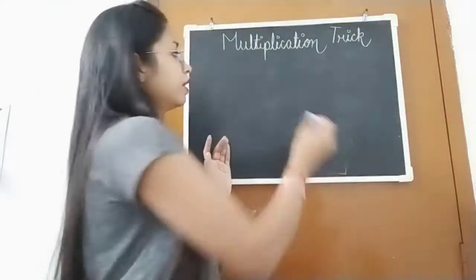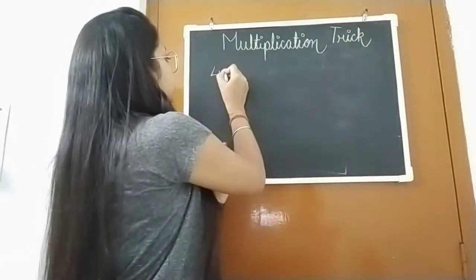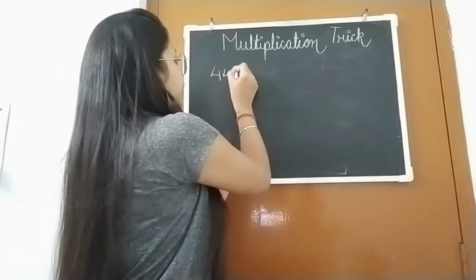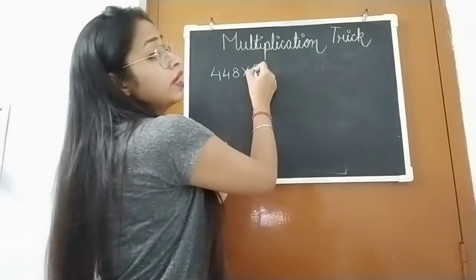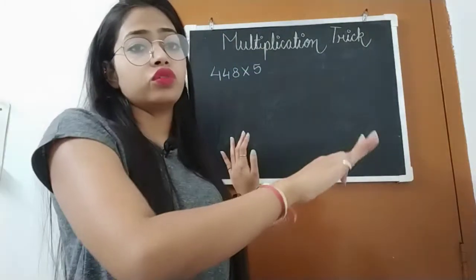For example, we have the number 448 and we're going to multiply it by 5.